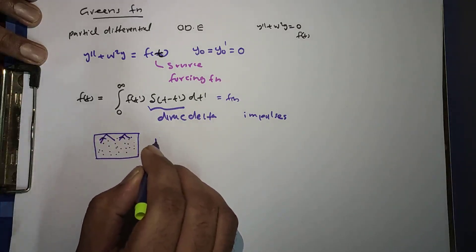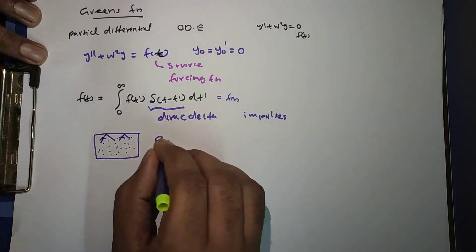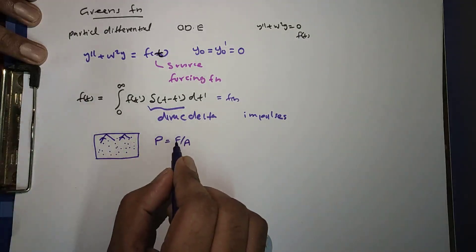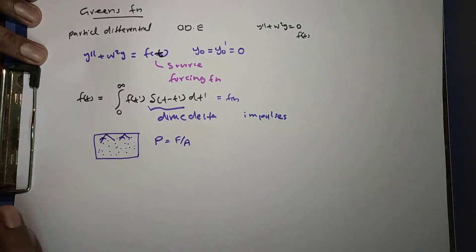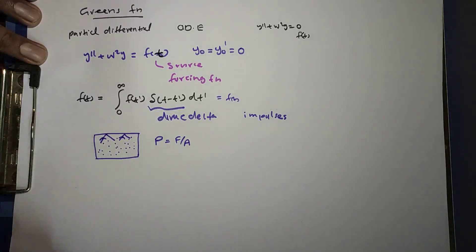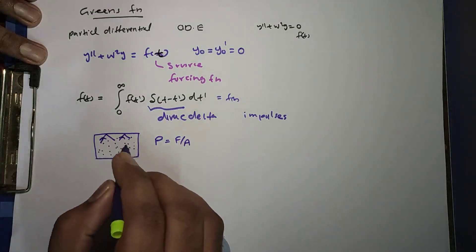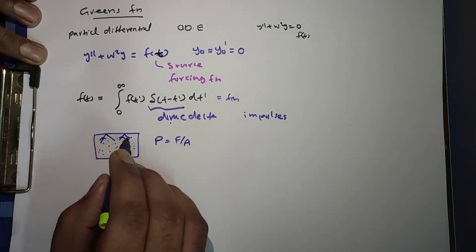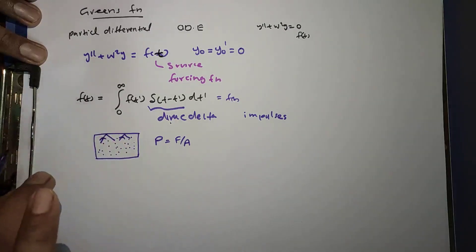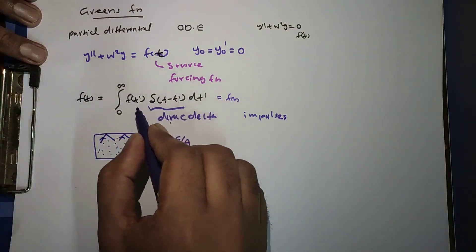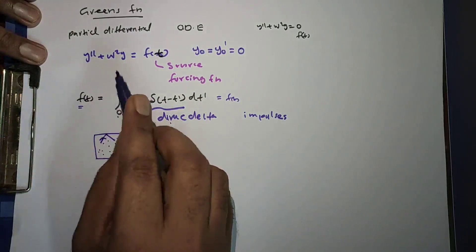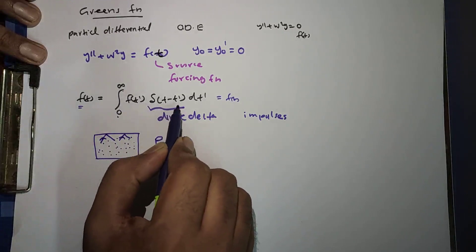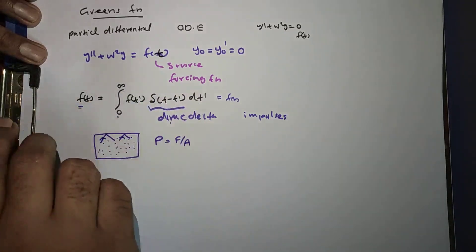Each individual collision or impact can be modeled as an impulse, represented by the Dirac delta function. So you can write f of t equals the integral from 0 to infinity of f of t prime, delta of t minus t prime, dt prime. Using the integral property of the Dirac delta function and substituting t prime, you get back f of t.